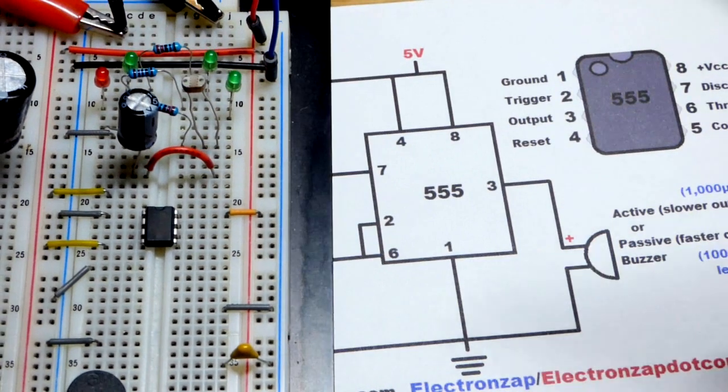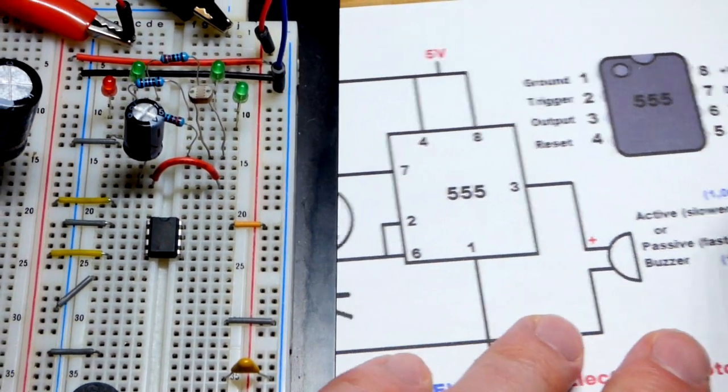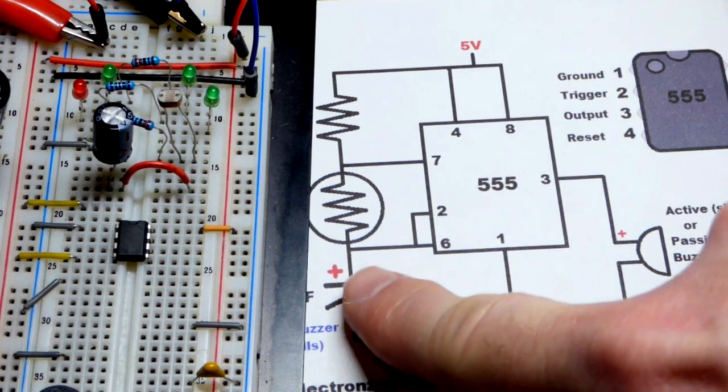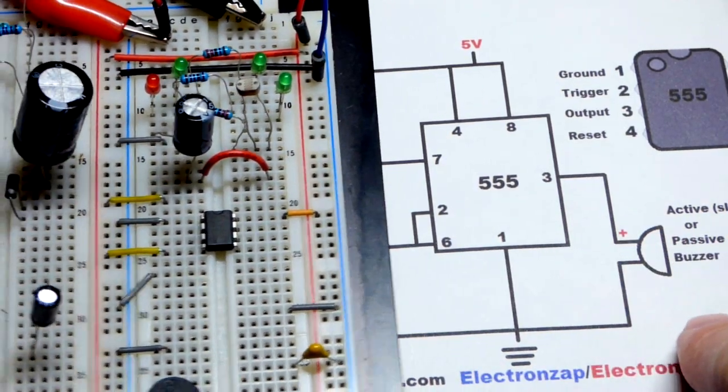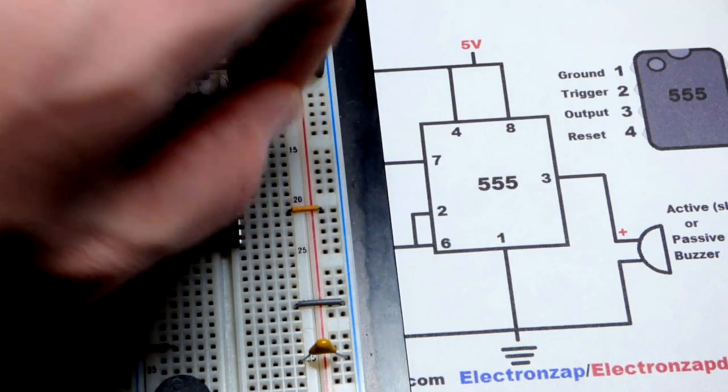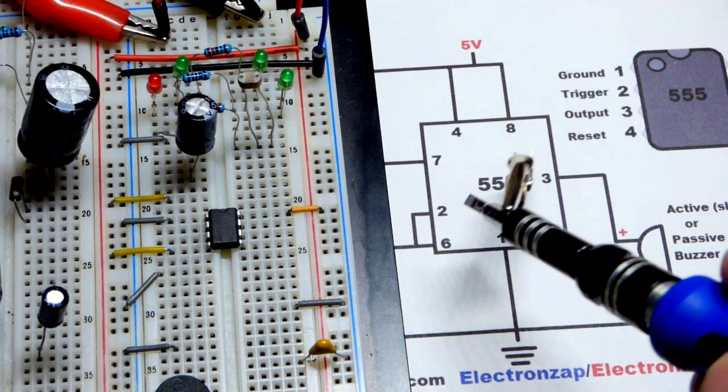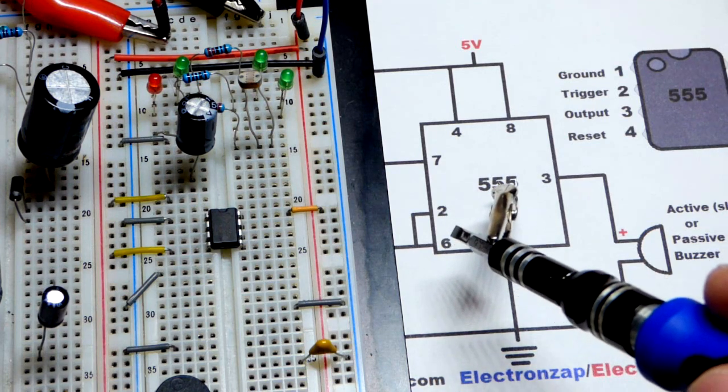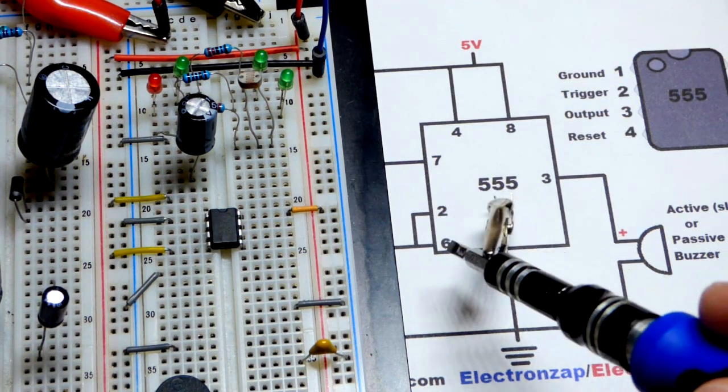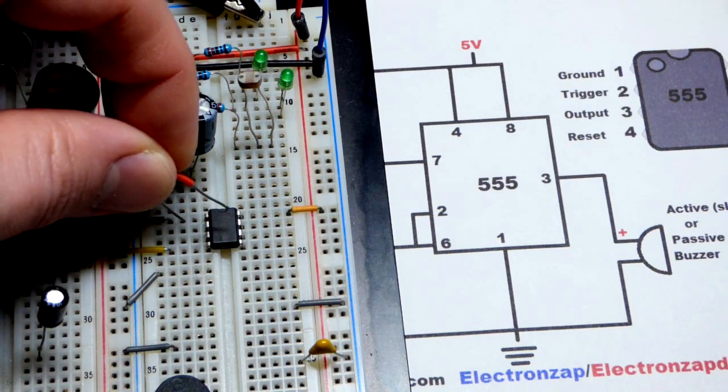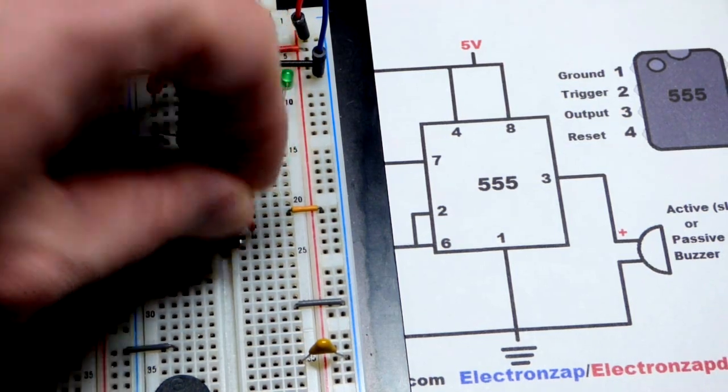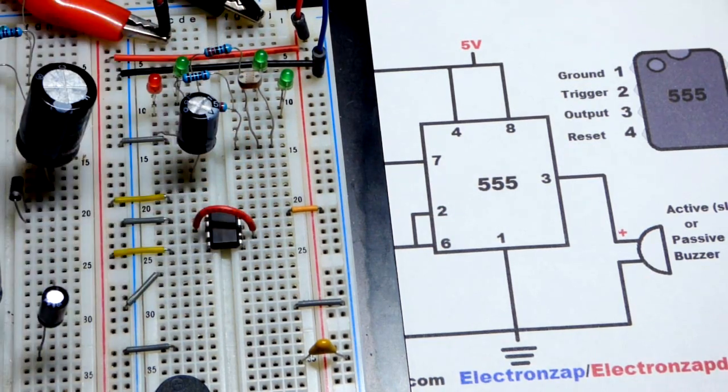Now let's do another jumper right here. Here you can see pin 2 and pin 6. They monitor the voltage of the capacitor, and so they monitor the same voltage. Pin 2 waits for less than 1/3 supply voltage. Pin 6 waits for more than 2/3 supply voltage, and they each change the output accordingly. So I'm just going to take a jumper right there and connect the two pins directly together.